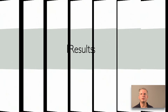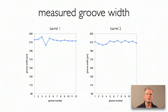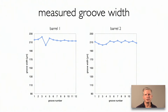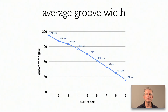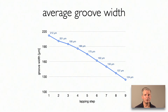Here you see the measured width of 24 grooves after the first lapping action. As expected, the grooves don't all have the same dimensions — especially the third groove of the first barrel is deviating. In total, we performed 9 runs of lapping, groove measurements, performance measurements, and analysis. On average, the groove width was reduced from 212 micron to about 124 micron. With every step, not only the width was reduced but also the depth, meaning the flow area of the groove was reduced by about a factor of 3 in this project.